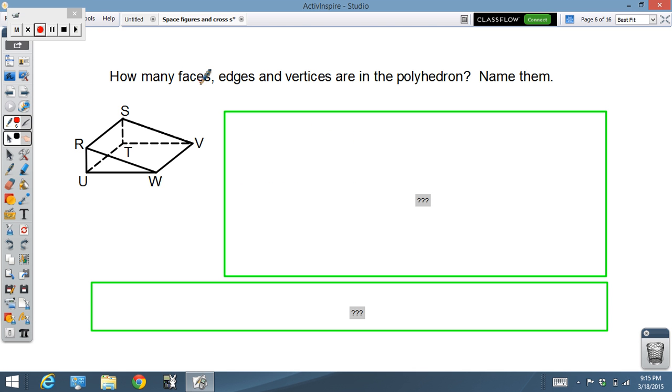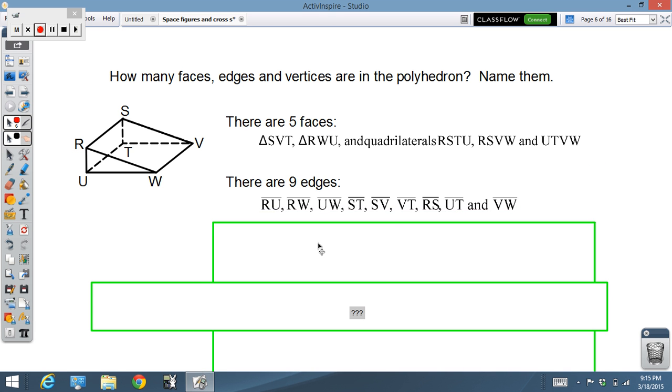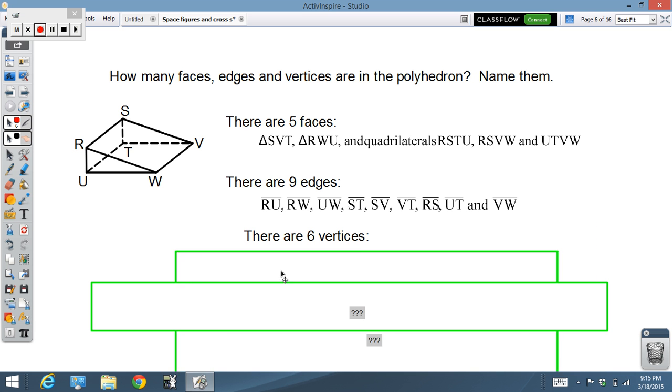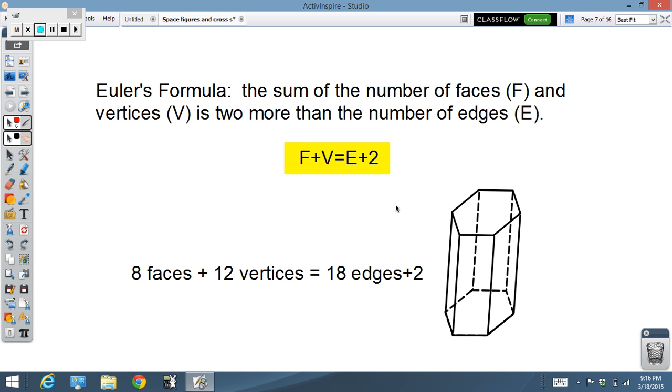Here's one for you to do, by the way. Faces, edges, vertices. Pause. Do it on your own. Here come answers. There are five faces. Two triangles, three quadrilaterals. Listed like that. There are nine edges, all segments, and there are six vertices, all those points at the corners. Notice again, the number of faces plus the number of vertices equals edges plus two. Five plus six equals nine plus two.